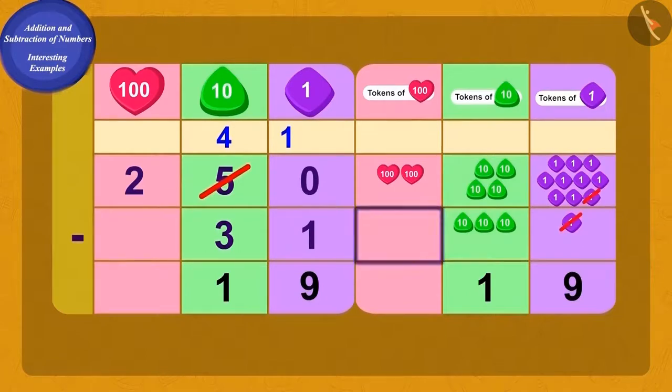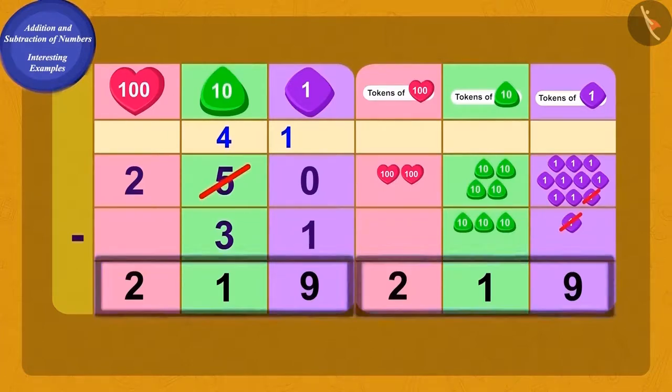And finally, subtract 0 hundred from 200. Then what do we get? 200. The monkeys stole Appu's 219 sweet boxes.